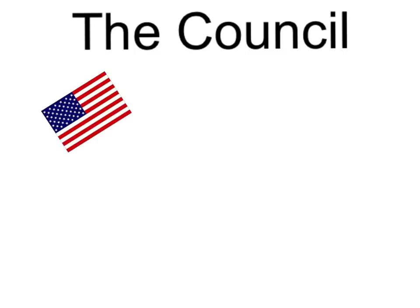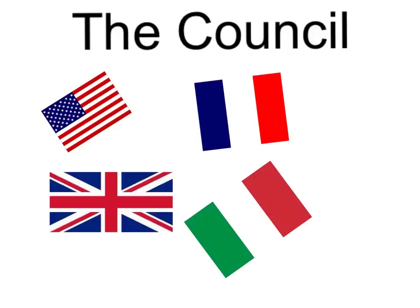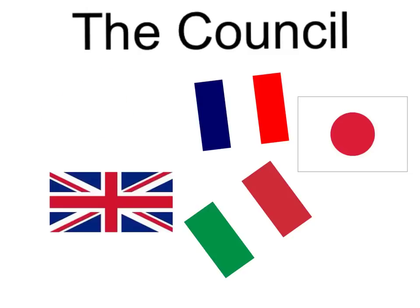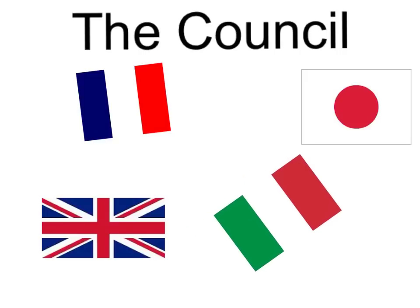Next, we'll look at the Council. In the Treaty of Versailles section where the League of Nations was discussed, the Council was going to be made up of five permanent members. These were America, the United Kingdom, France, Italy and Japan. But as America were not involved in the League of Nations anymore, there were four left: the French, the British, the Japanese and the Italians as permanent members.